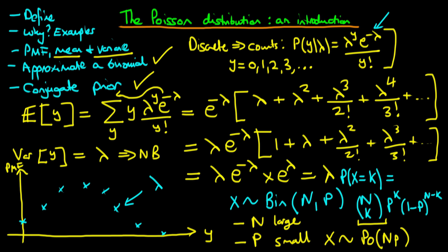Finally, I want to state the conjugate prior for a Poisson distribution. It turns out — and we'll prove this in later videos — that assuming a prior on lambda where lambda is gamma distributed with parameters alpha and beta is the conjugate prior to the Poisson distribution. So when we have a gamma prior on lambda and a Poisson likelihood, the posterior distribution will itself be a gamma distribution.